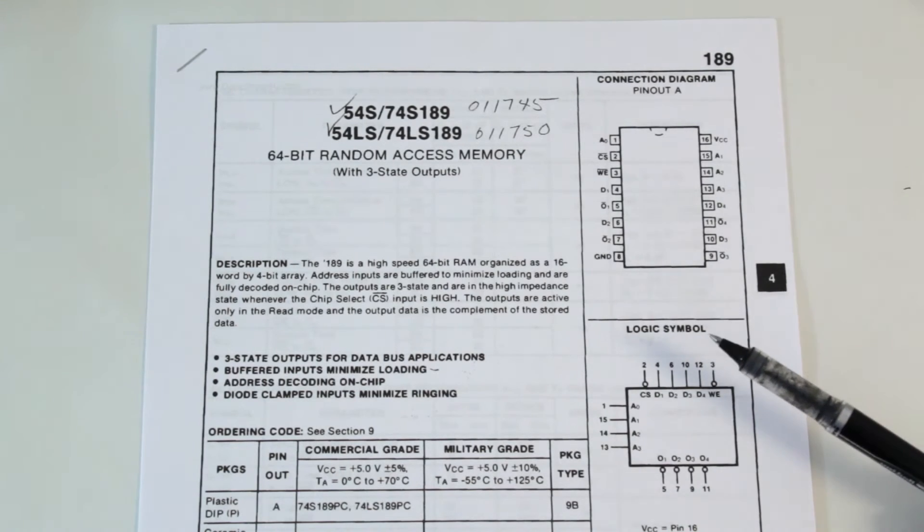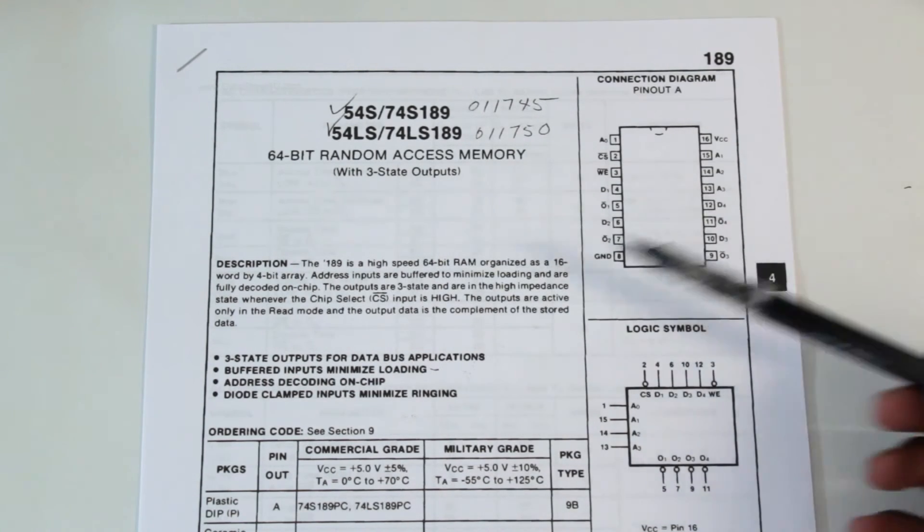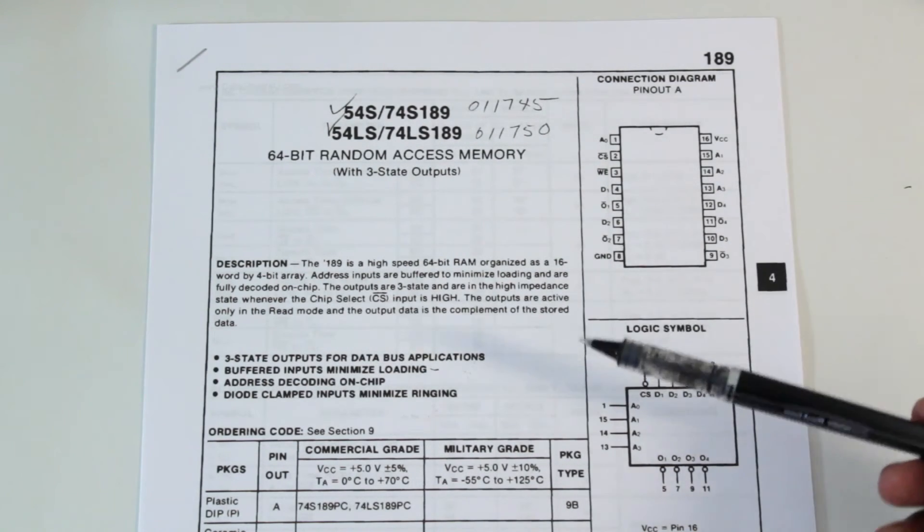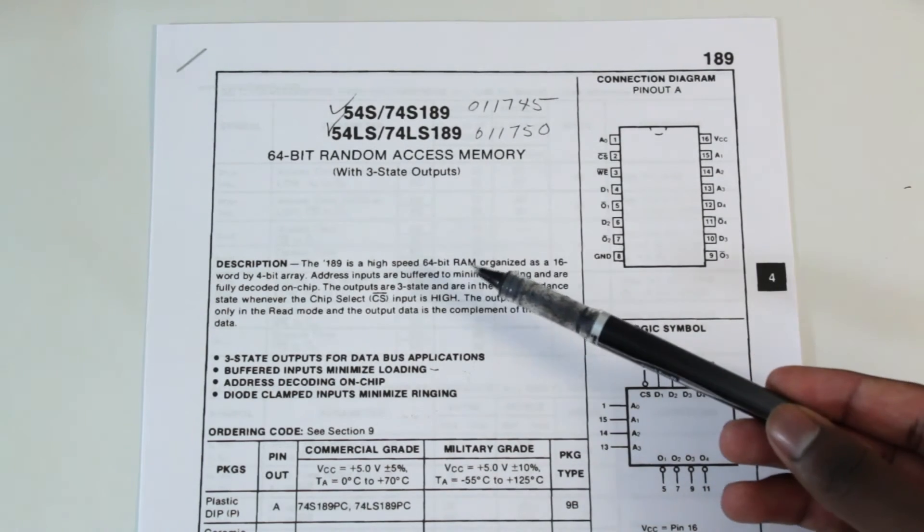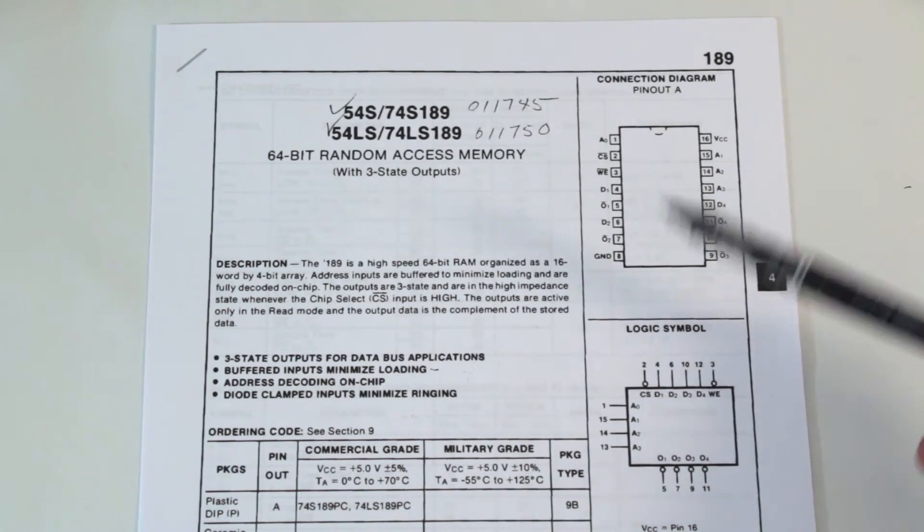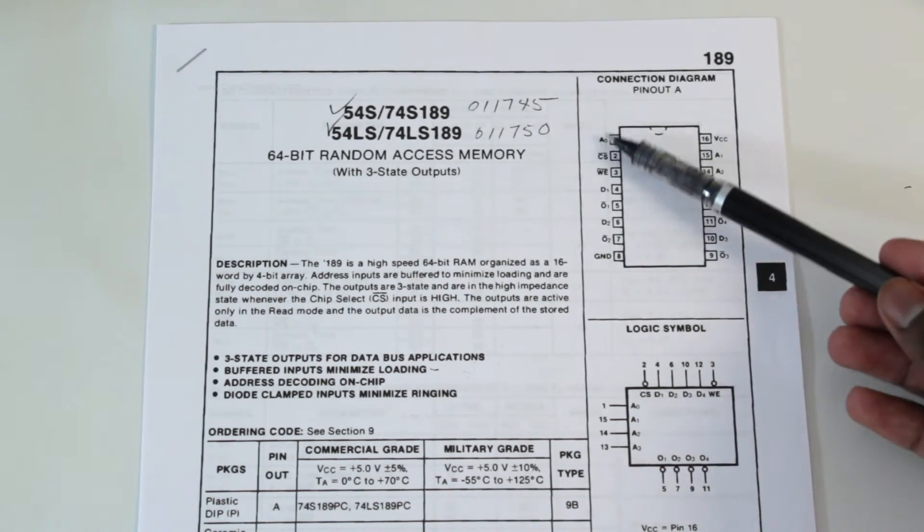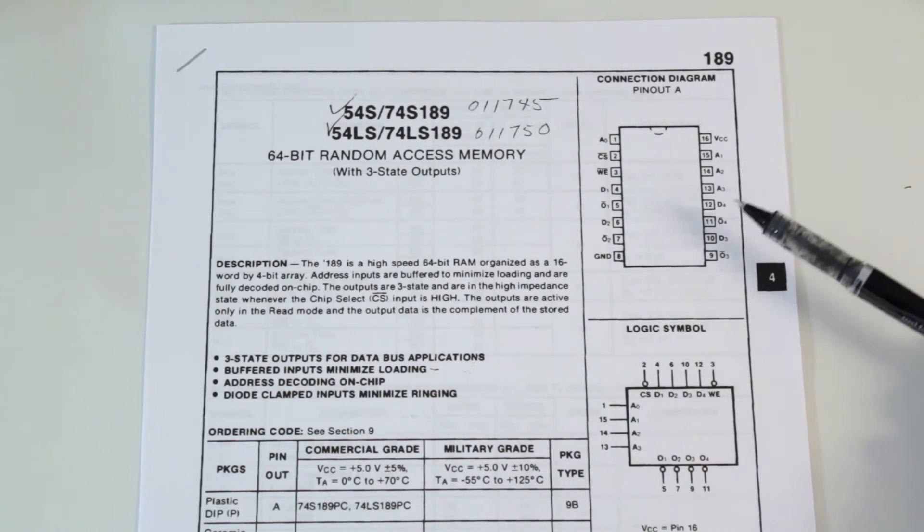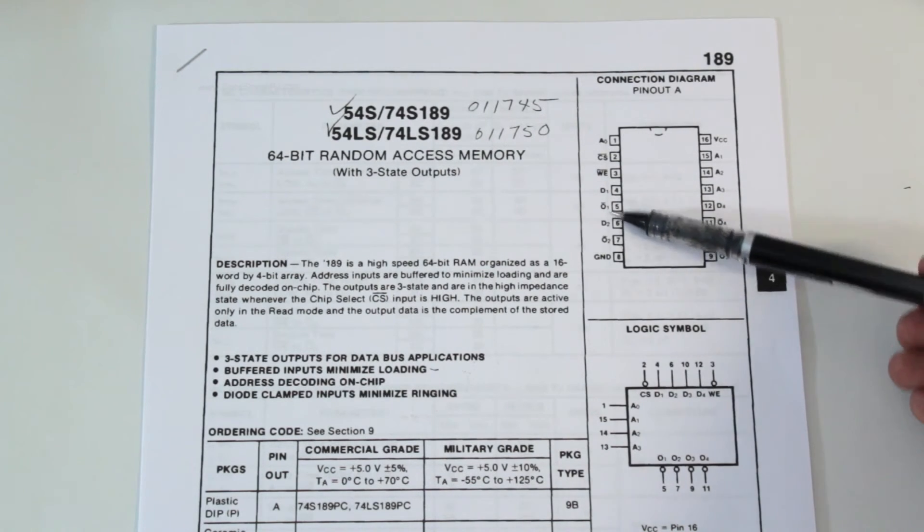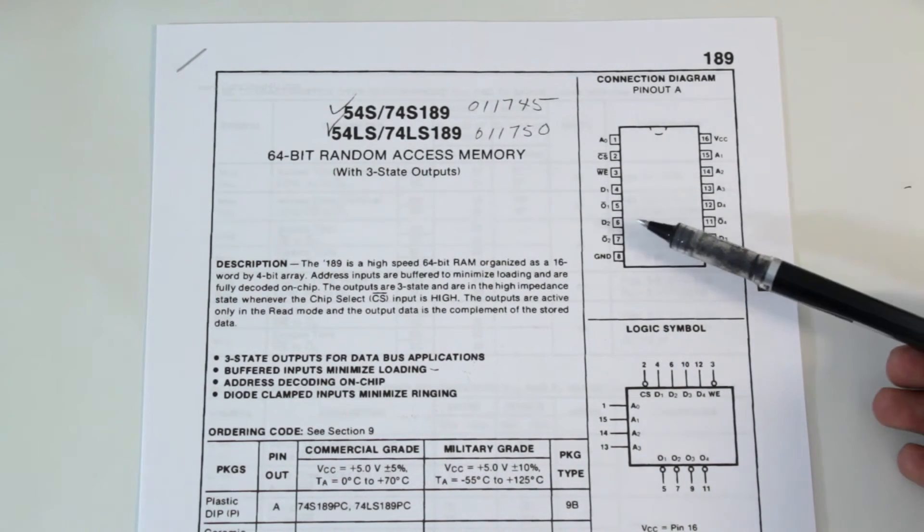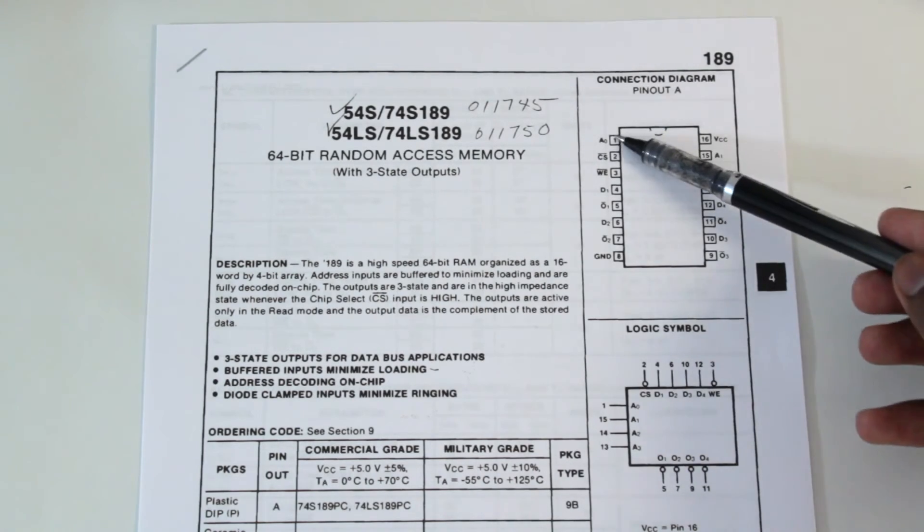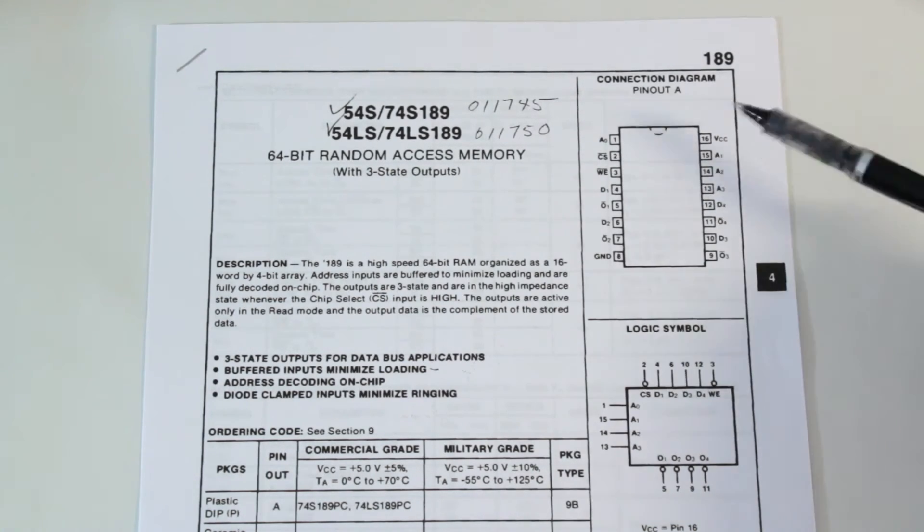So this actually has 64 bits of random access memory, and it's actually split up into bytes of four bits each. So it's actually 16 bytes of four bits. So with a four-bit address, you can access all 16 of those options. So this is how these four is going to be your output, basically. Pins 5, 7, 9, and 11 are going to be your output for whatever byte of RAM that you're accessing based on whatever address you put in.